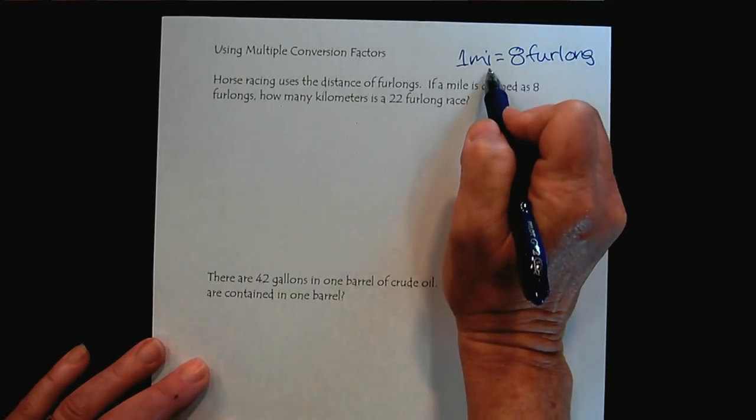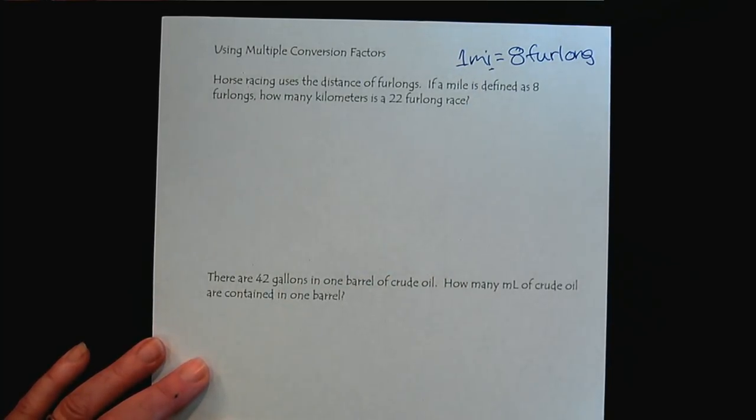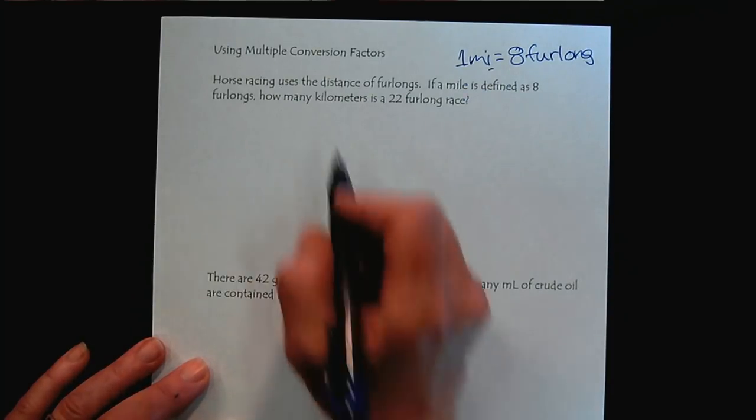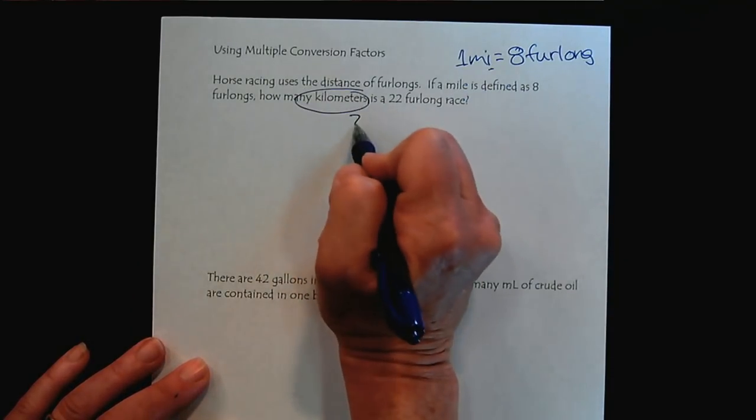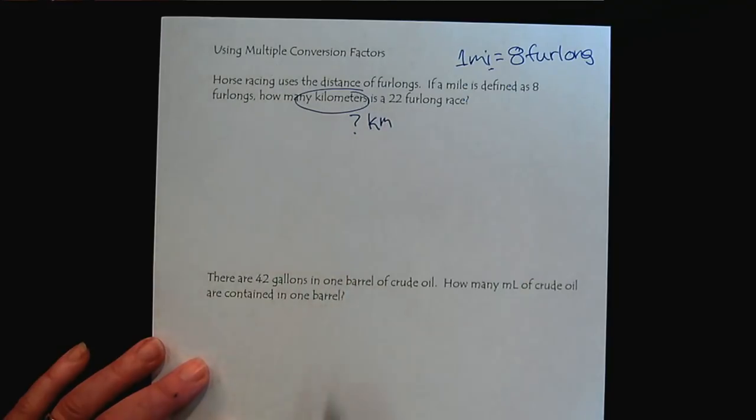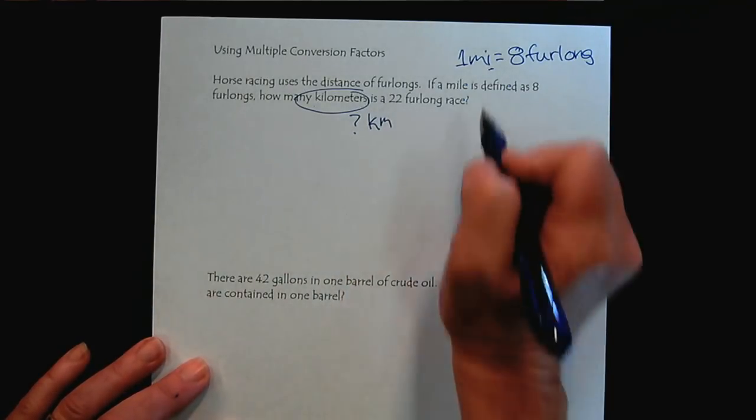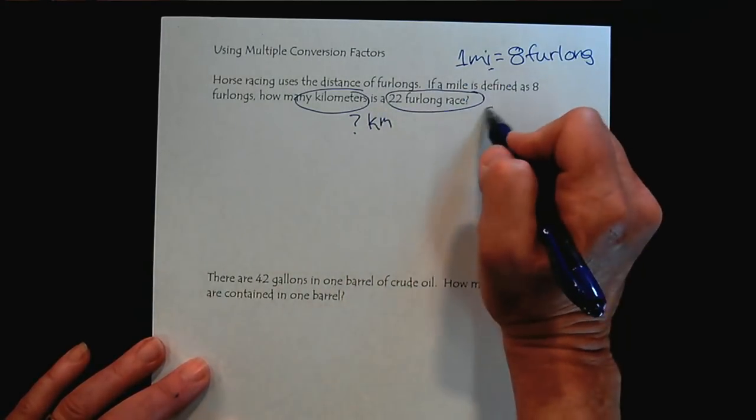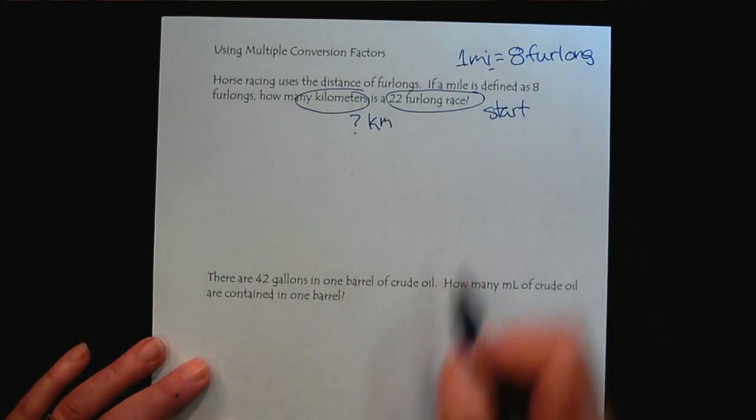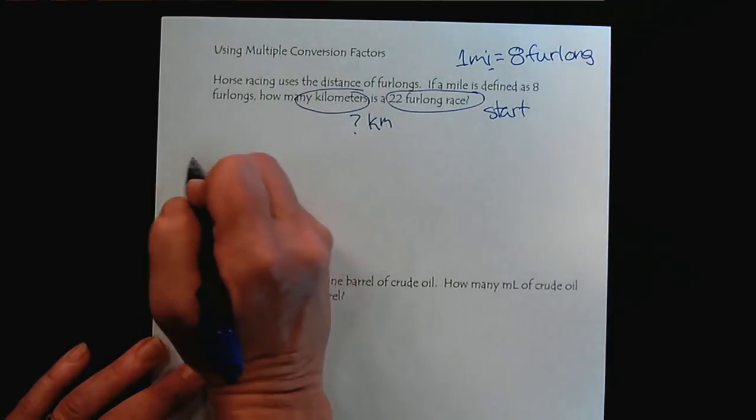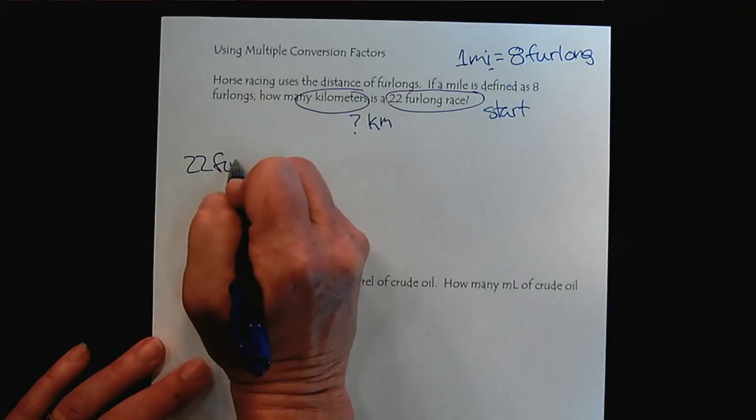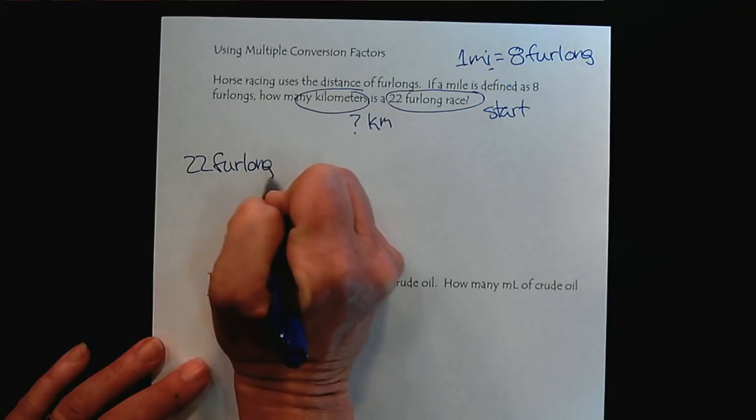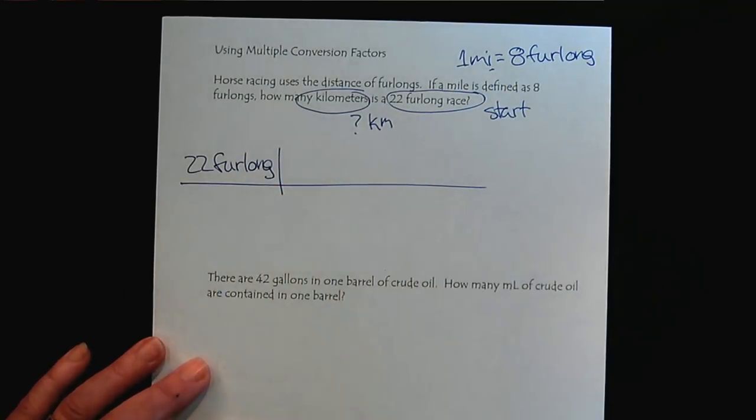So we know that 1 mile equals 8 furlongs. And it's important with miles, make sure to pay attention to the difference between miles and meters. And we want to get to kilometers. That's what we're curious about. And so where do we start? We start here. So we have a 22 furlong race. And we're trying to get to kilometers.